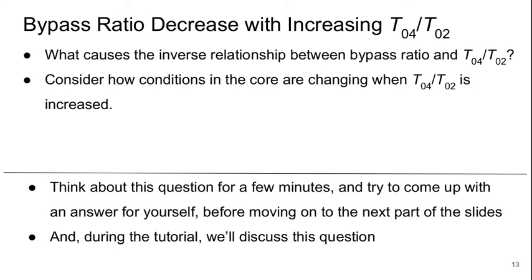This is another interesting trend. What do you think causes this inverse relationship? Consider how conditions in the core are changing when T0.4 over T0.2 increases. Take a minute and think about this and try to come up with an answer for yourself before you move on to the next part of the video, and we'll also take this up during the tutorial.